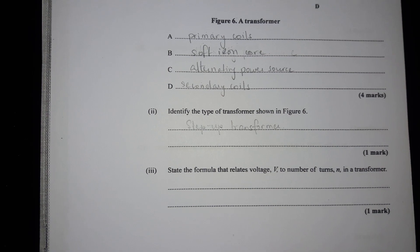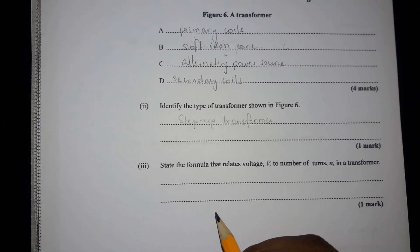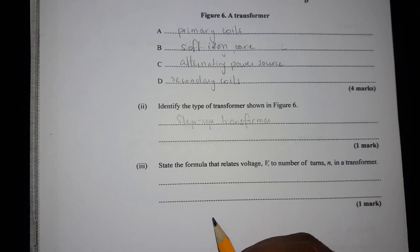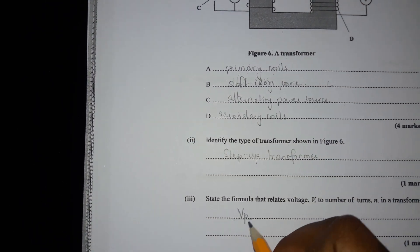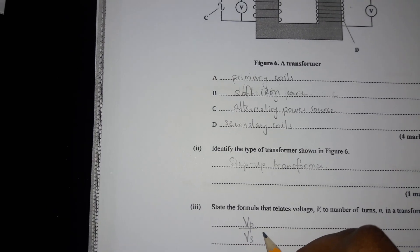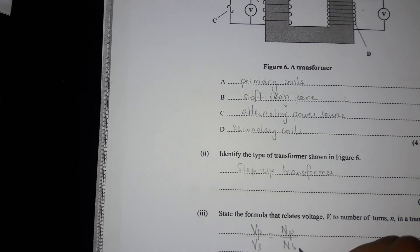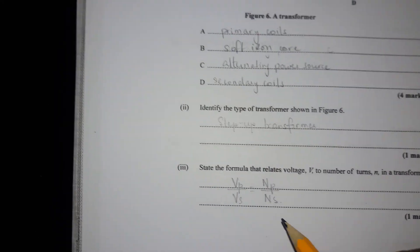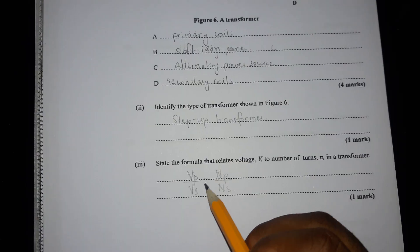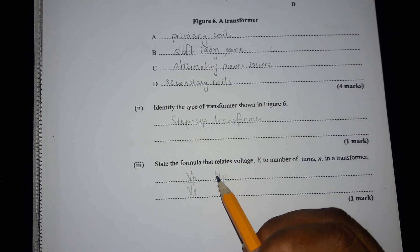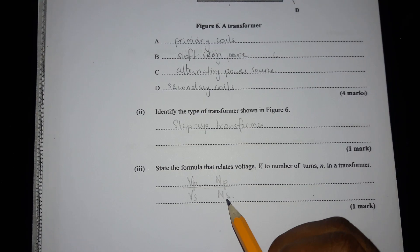State the formula that relates voltage V to number of turns N in a transformer. So Vp over Vs equals Np over Ns. The voltage in the primary side divided by the voltage in the secondary side equals the number of turns in the primary side to the number of turns in the secondary side.